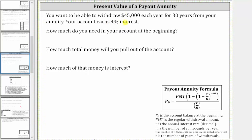You want to be able to withdraw $45,000 each year for 30 years from your annuity. Your account earns 4% interest. How much do you need in the account at the beginning? How much total money will you pull out of the account? And how much of that money is interest?